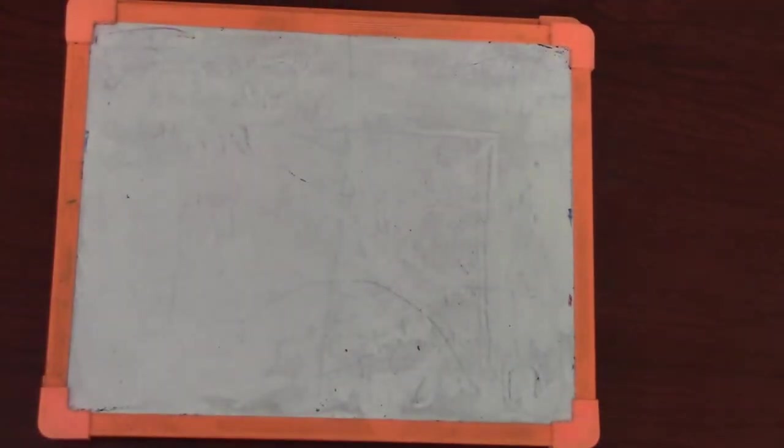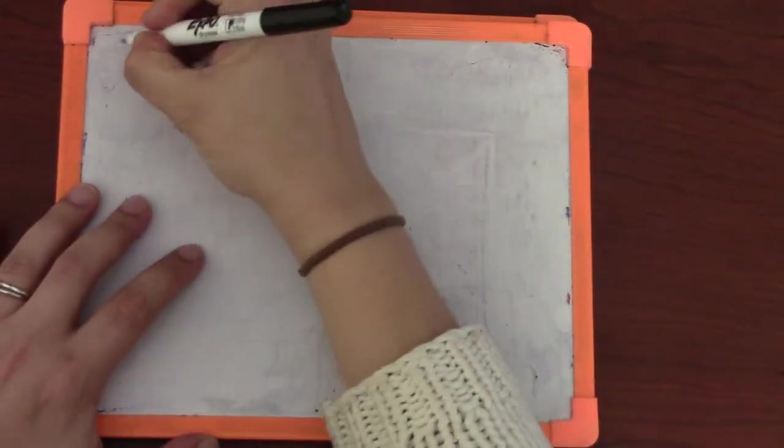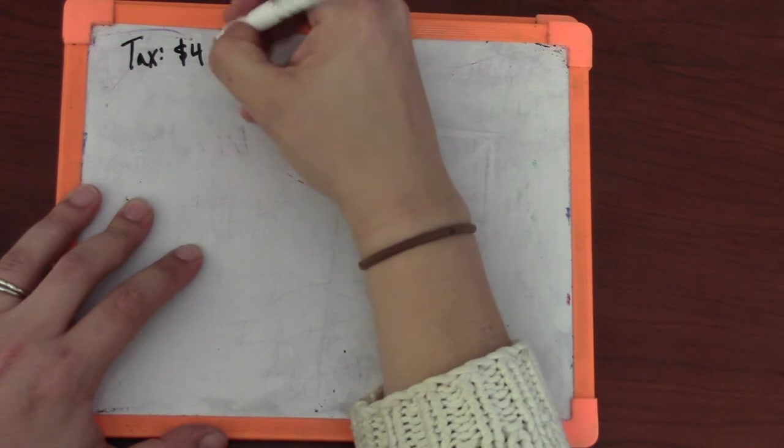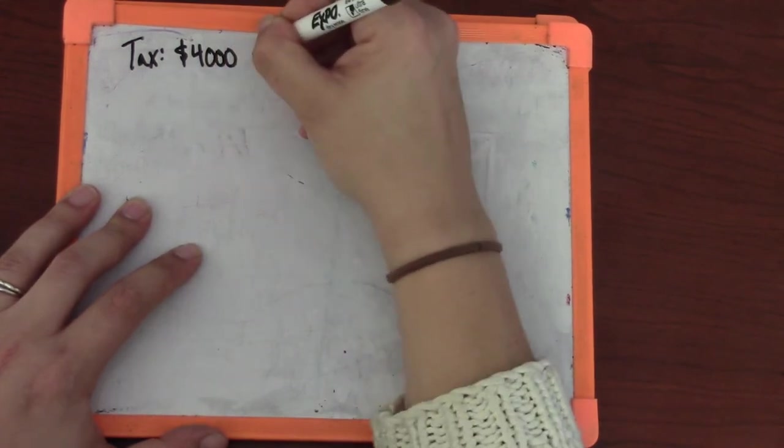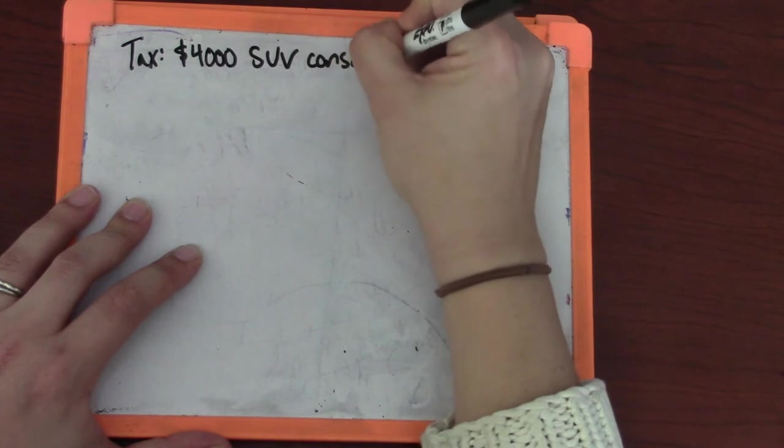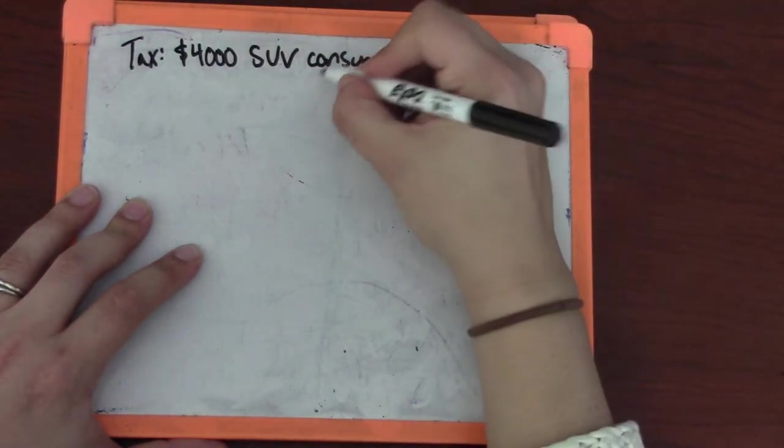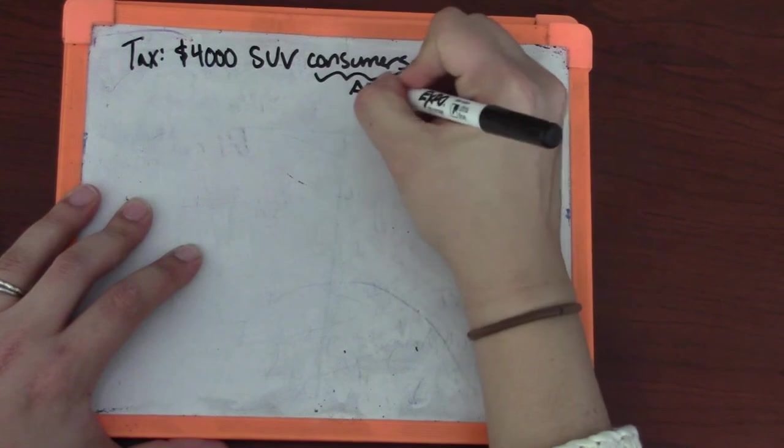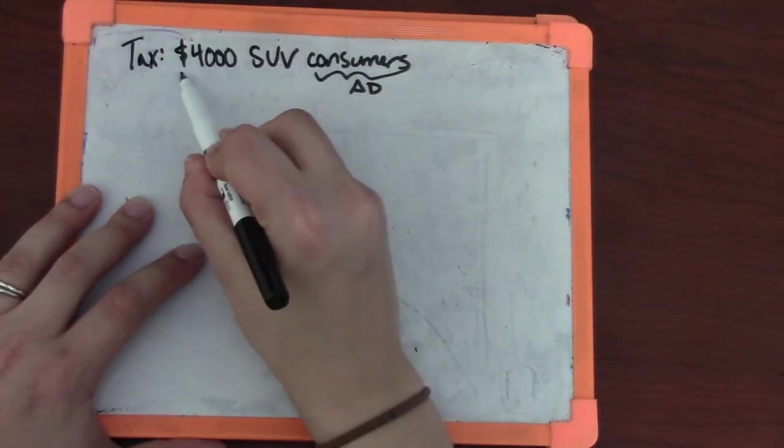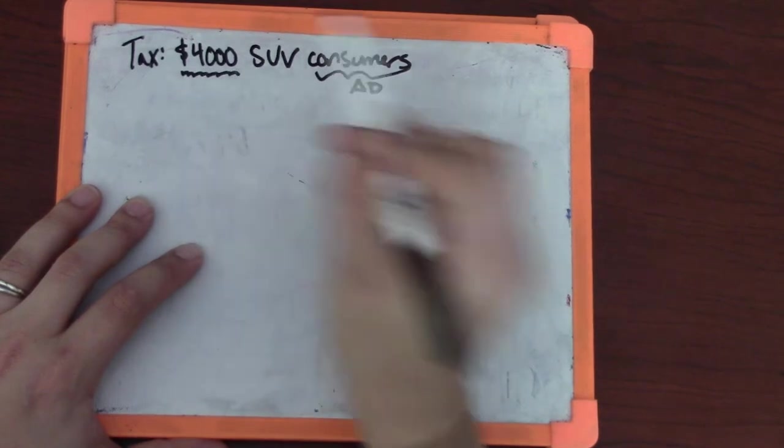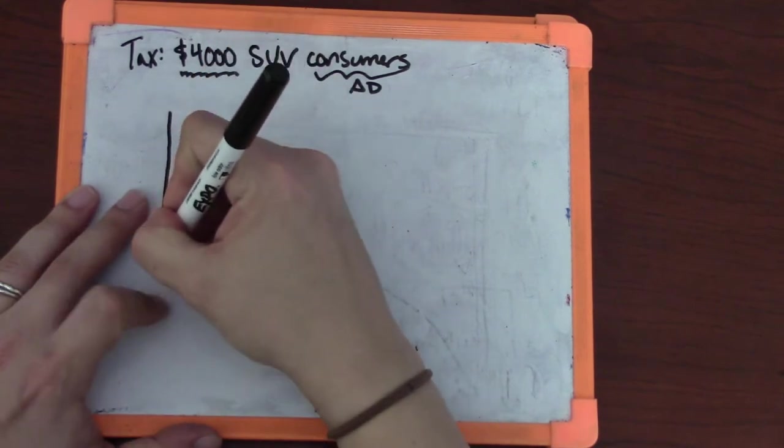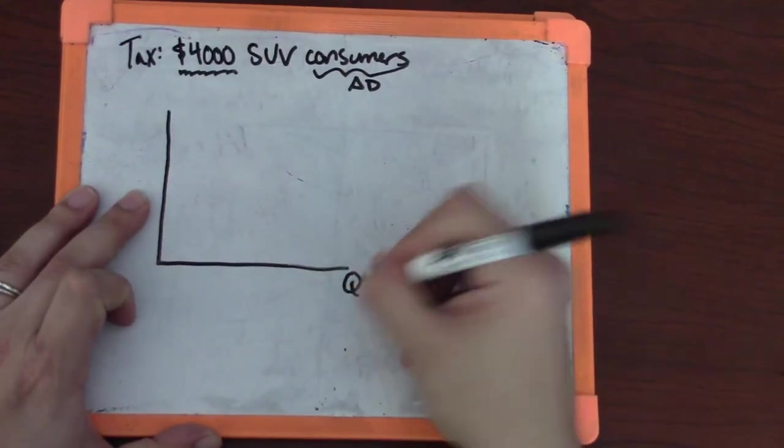First, let's consider a tax. Let's say it's a $4,000 tax on SUV consumers. Because it's on consumers, we know that it's going to directly shift the demand curve, and because it's $4,000, that will be the vertical amount of the shift.